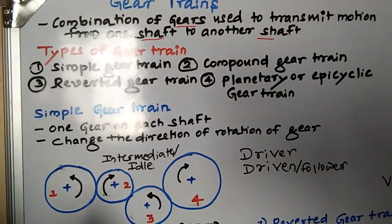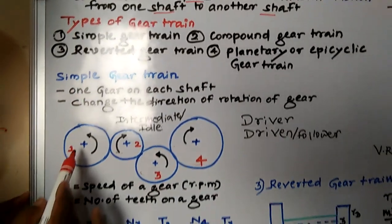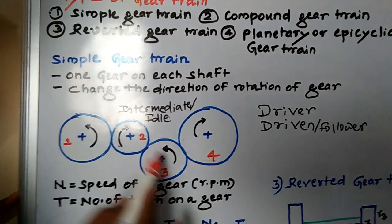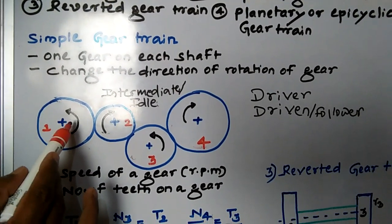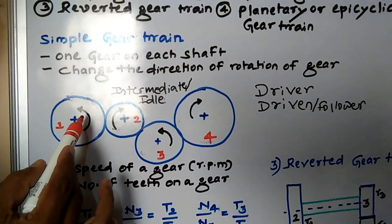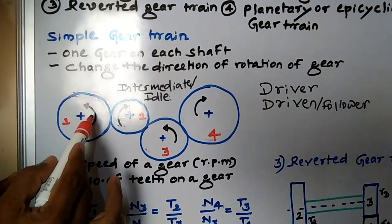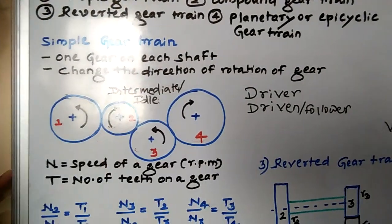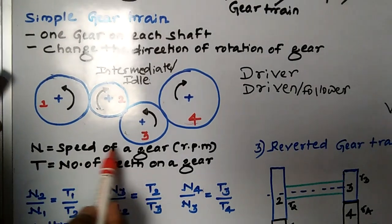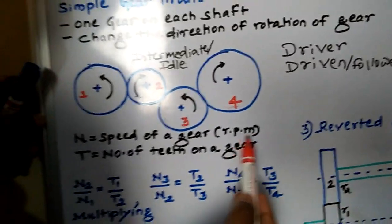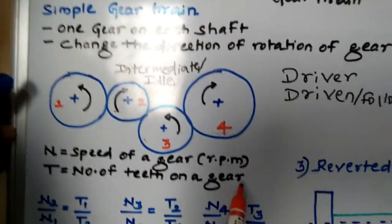Look at this figure — I have drawn a simple gear train. I have taken four gears: one, two, three, four. I have shown the direction using a black marker — this is anti-clockwise, this is clockwise, this is anti-clockwise, this is clockwise. Here, N is the speed of the gear, taken in RPM (revolutions per minute). T is the number of teeth on the gear.